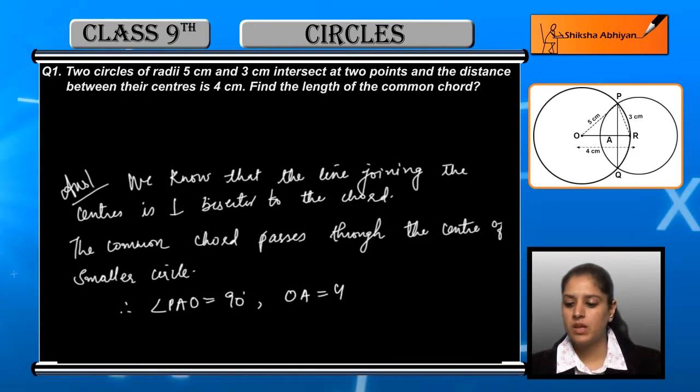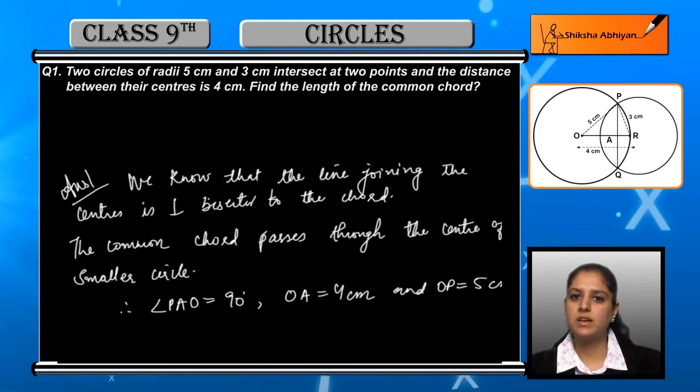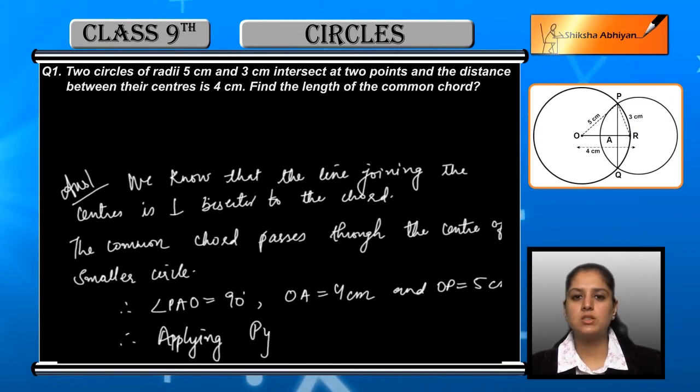Now if we apply Pythagoras theorem, because it applies in right angle triangles and this is a right angle triangle, hypotenuse squared is equal to perpendicular squared plus base squared.